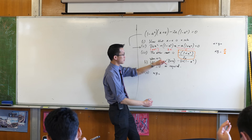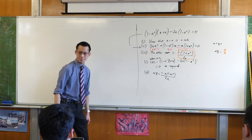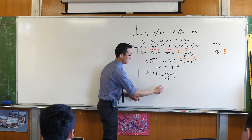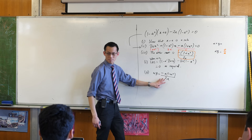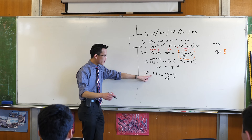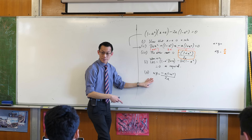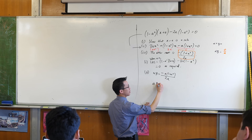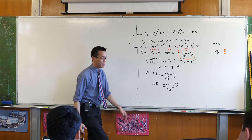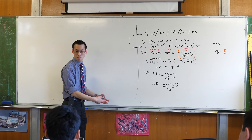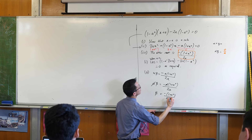I'm going to go straight to the product of roots: alpha times beta equals c on a, which is negative-a times (1 plus a-squared) on 2a. Now, alpha and beta are the two roots, but I already know what one of the roots is — it's a, from part one. So therefore, I'm going to write the left-hand side as a times beta. You can see here: just divide both sides by a, cancel, cancel. The other root — that's what beta is — is minus (1 plus a-squared) on 2a, as required.